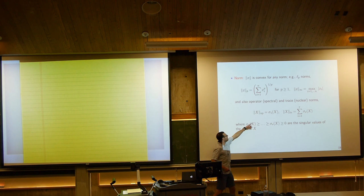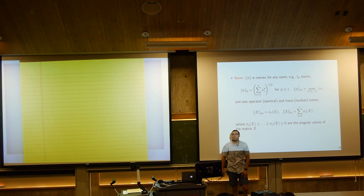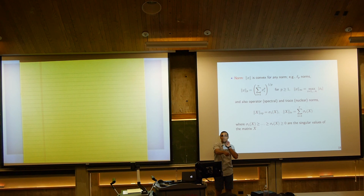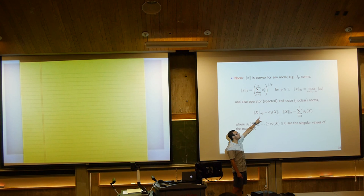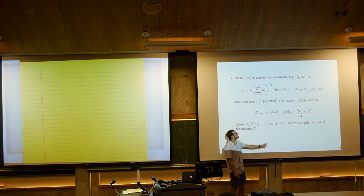The operator norm is always positive and obeys the basic properties of a norm. It's zero if and only if X is the zero matrix. It satisfies positive homogeneity: the operator norm of a scalar A times X equals A times the operator norm of X, because the largest singular value of a multiple of a matrix is just that same multiple of the singular value. It also satisfies the triangle inequality.